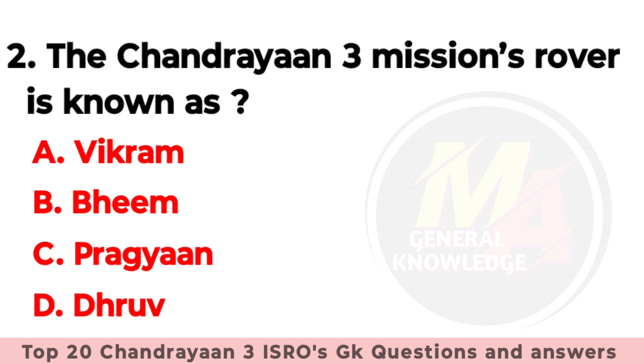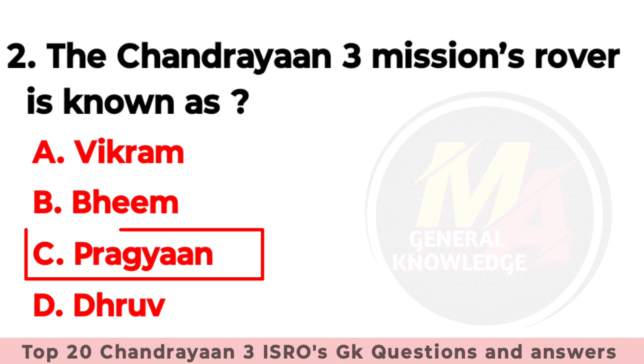Q2: The Chandrayaan-3 mission rover is known as — Option A: Vikram, Option B: Bheem, Option C: Pragyan, Option D: Dhruv. Friends, your right option is option number C — Pragyan.